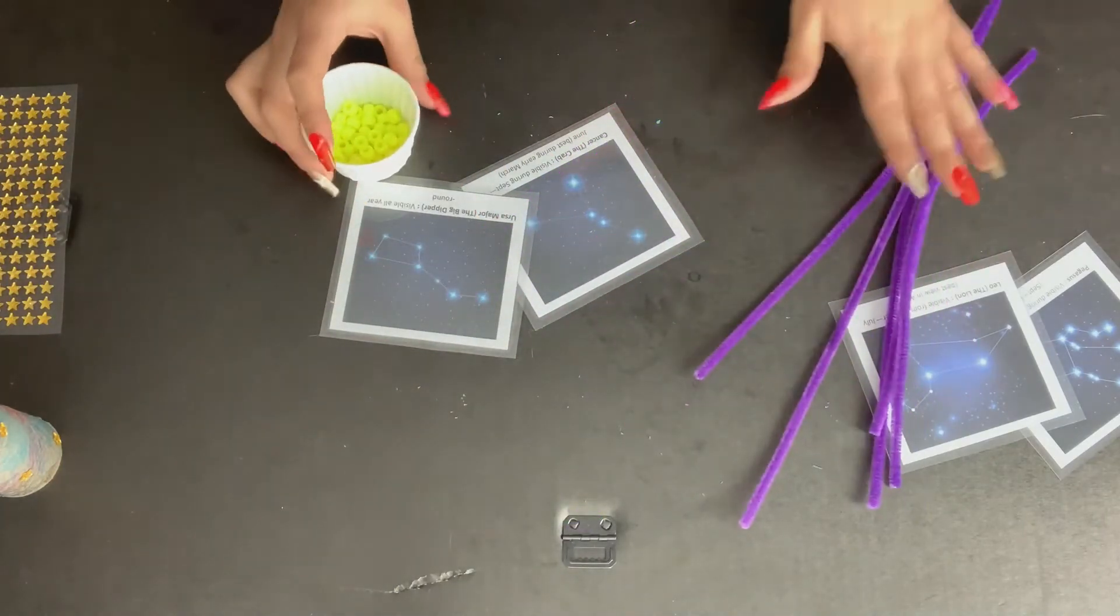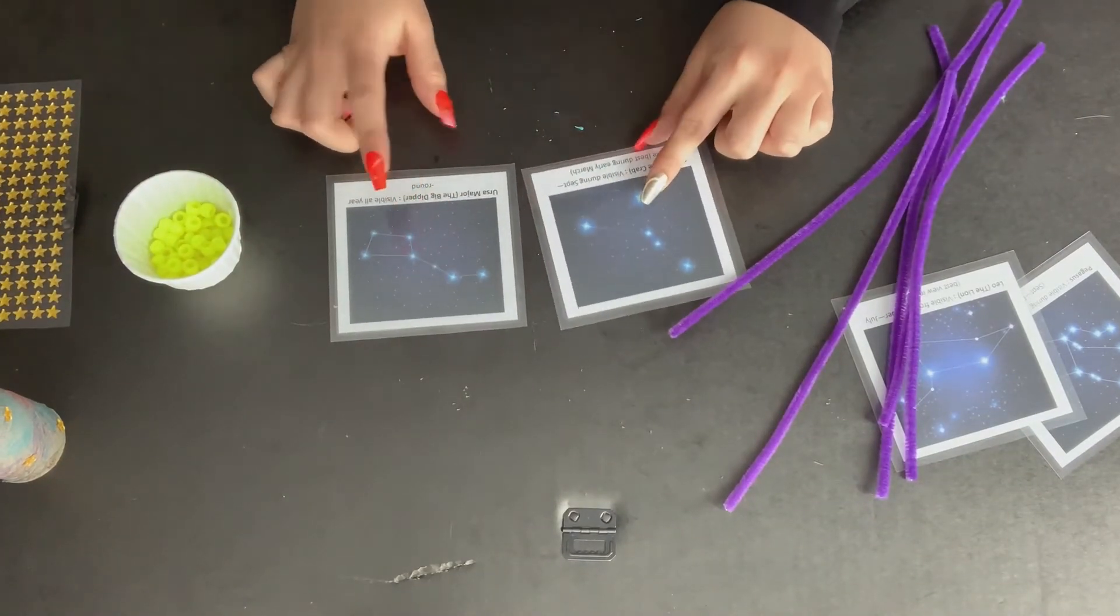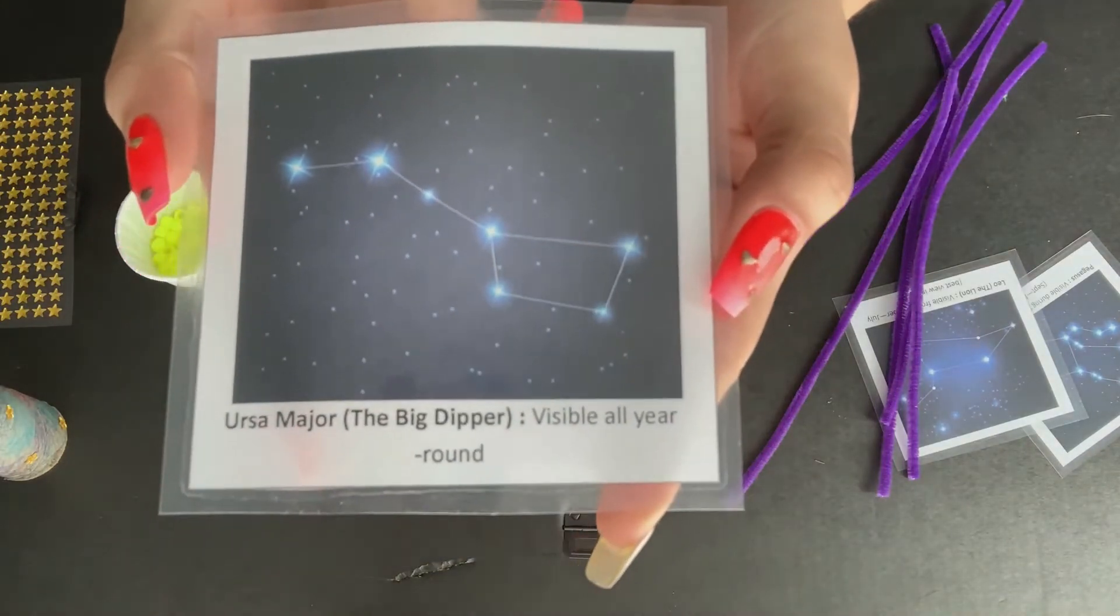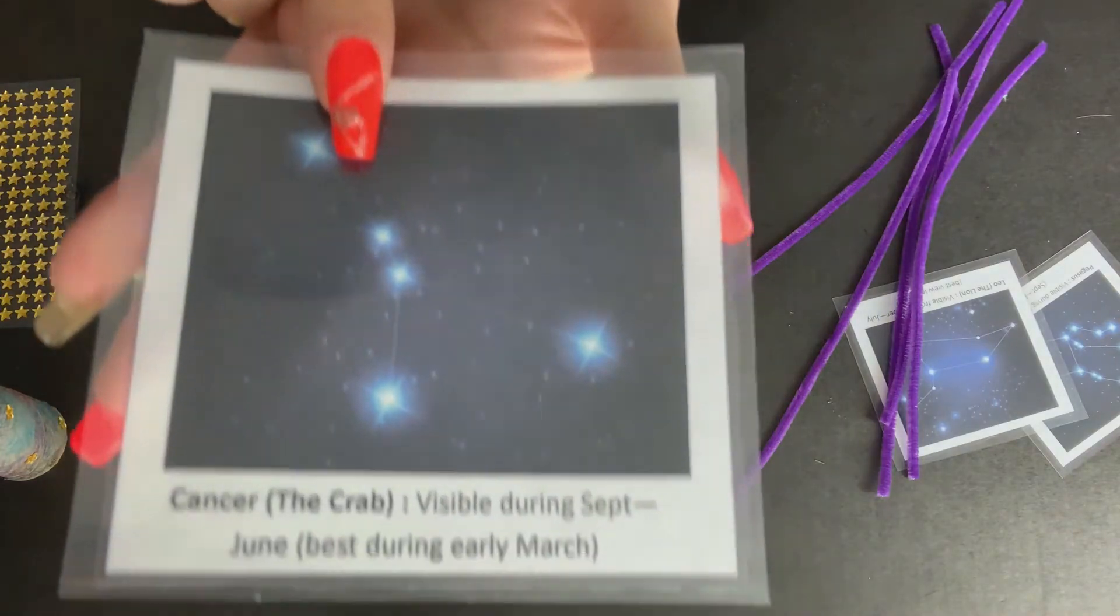So we're going to use our pipe cleaners and our pony beads. So I'm going to try these two today: the Big Dipper and Cancer the Crab.